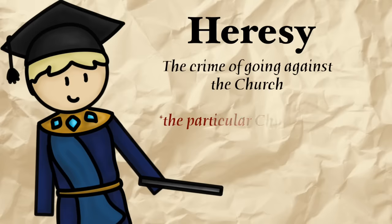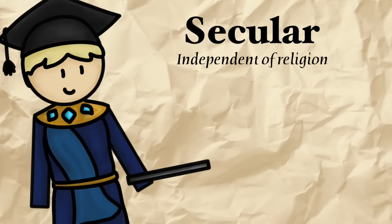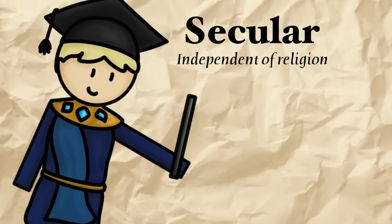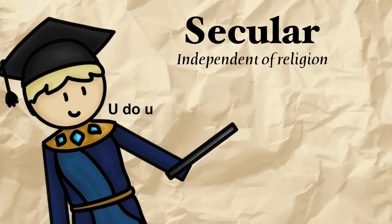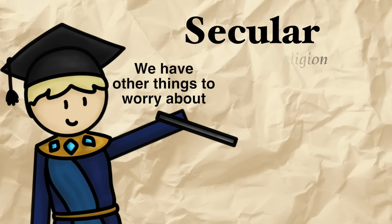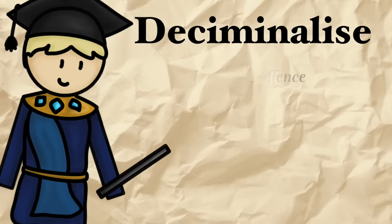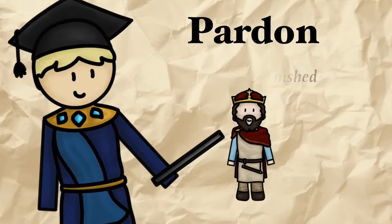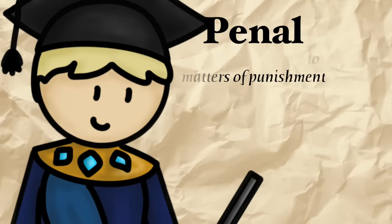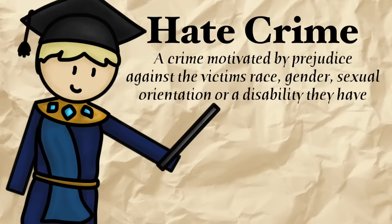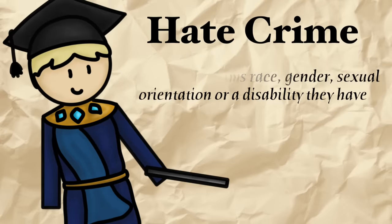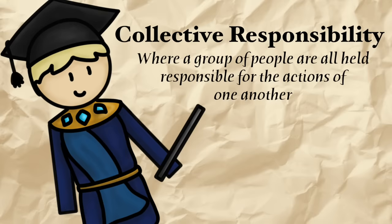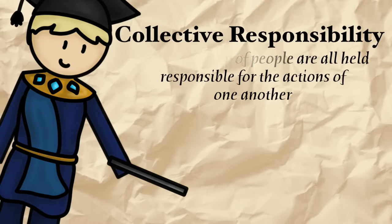The clergy are the church people. Heresy is the crime of going against the church. Secular means independent of religion — so not against it, just separate from it, like how our modern government doesn't command that we all go to church, but also doesn't tell everyone to denounce God. To decriminalise is to make something no longer a criminal offence. To pardon is to allow someone to get away with a crime unpunished — normally something only very important people can do, such as a king. Penal is anything relating to matters of punishment. A hate crime is a crime motivated by prejudice against a victim's race, gender, sexual orientation, or a disability they have. Finally, collective responsibility is where a group of people are all responsible for the actions of one another, meaning that if a member commits a crime and no one is brought forward, all members of the group are punished.